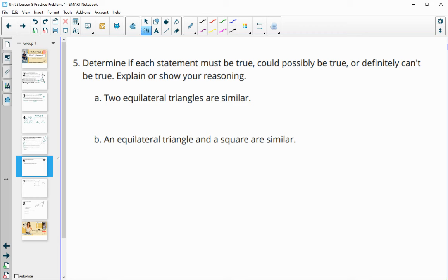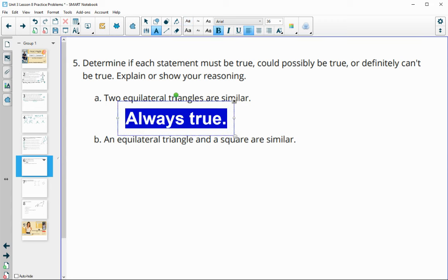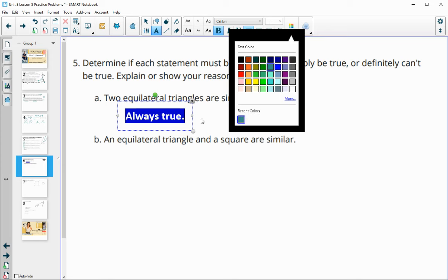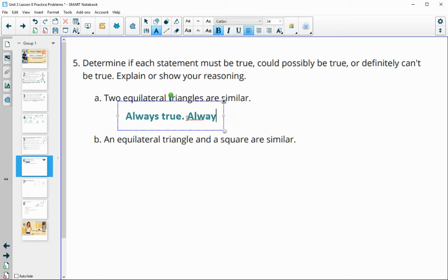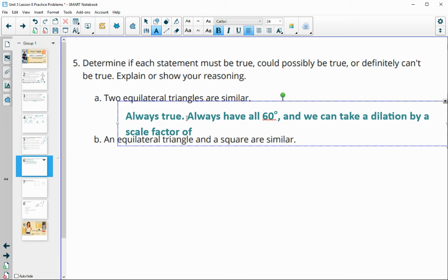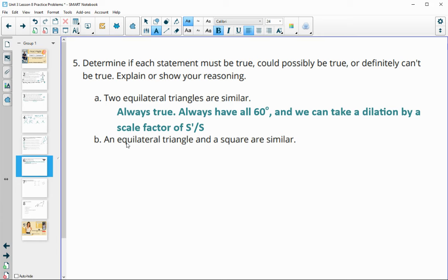Number five, determine if each statement must be true or could possibly be true or definitely can't be true. So two equilateral triangles are similar. This one is always going to be true. And that is going to be because the angles are the same. So let me make this a little bit smaller. So this is going to be always true because you will always have all 60 degree angles. So we know that the angles will match. And we can take a dilation by a scale factor of the new side length divided by the original side length since all the side lengths are the same. And that's going to put us to the same size triangle since all the side lengths were the same.